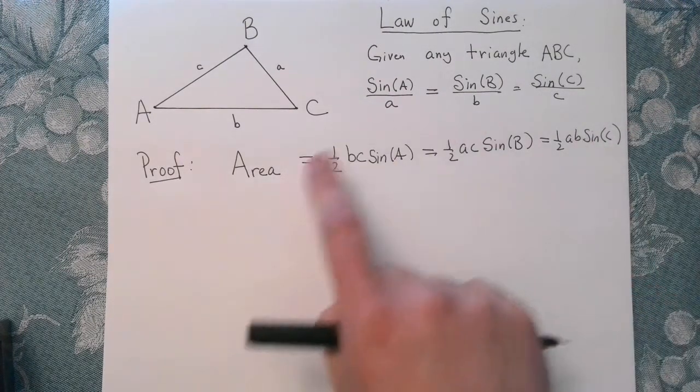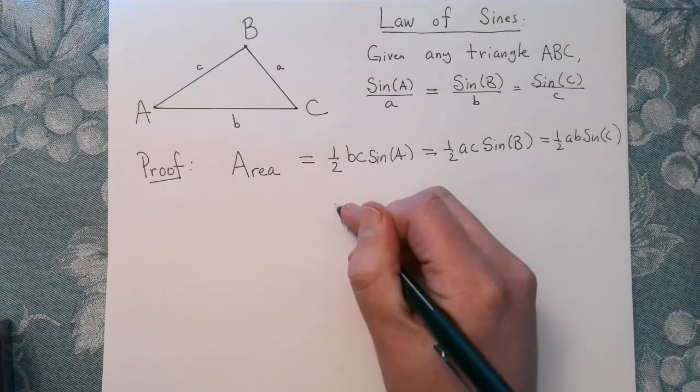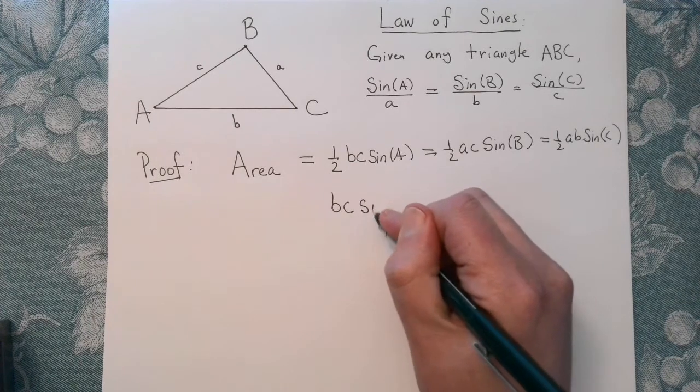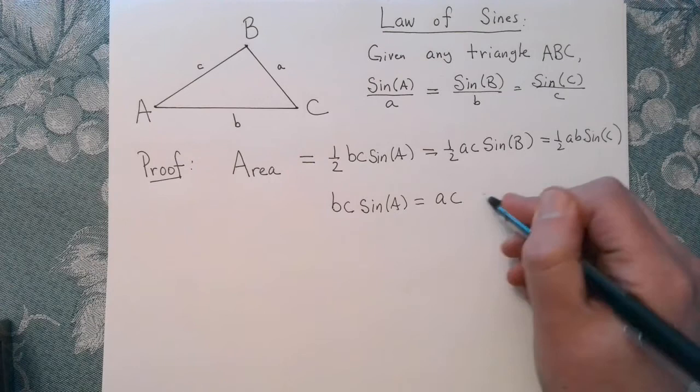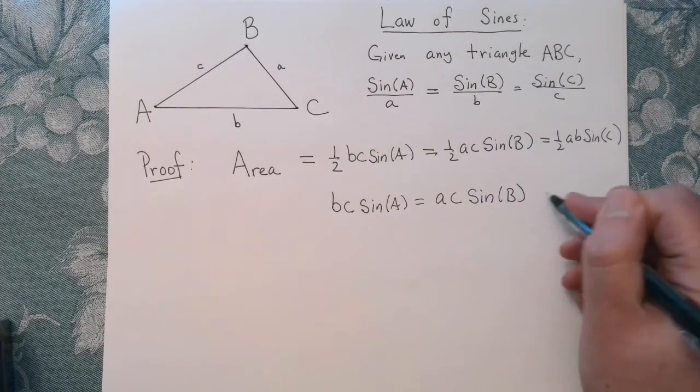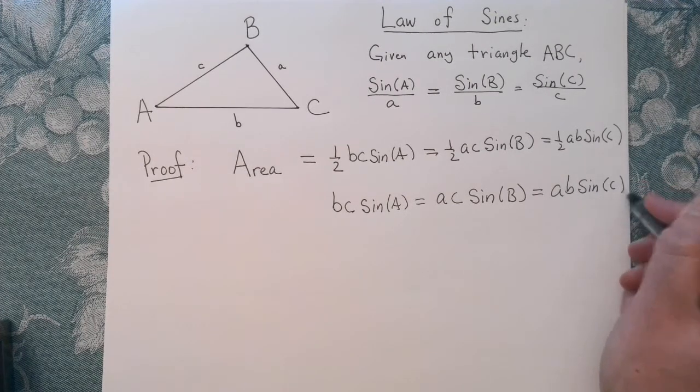And what I could do is I can take this and multiply everything by two. So that's going to give me the following. That's going to give me BC times the sine of A is equal to AC times the sine of B, and that's equal to AB times the sine of C.